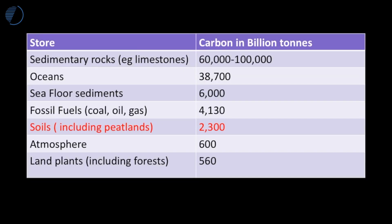Soil is in fact enormously important for the global carbon cycle. As you can see, soils, including peatlands, have a very large storage of carbon. They store around 2,300 billion tonnes of carbon, and they are more important than all the atmospheric store of carbon and more important than every living plant on Earth. This is incredibly significant when we think about the store of carbon and why that matters.